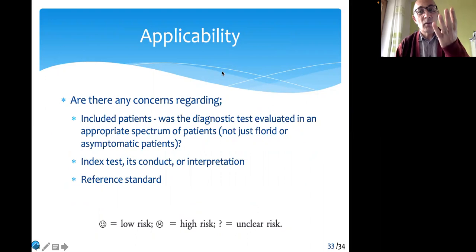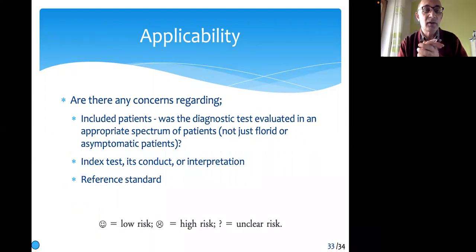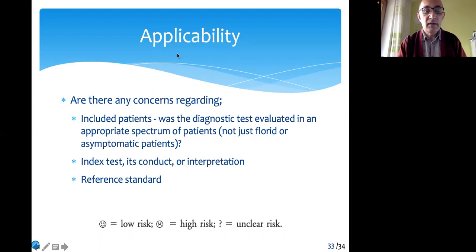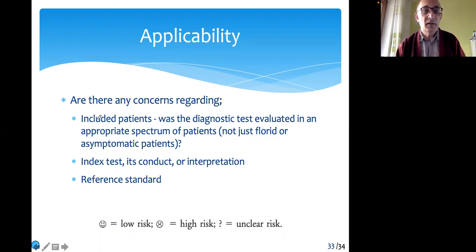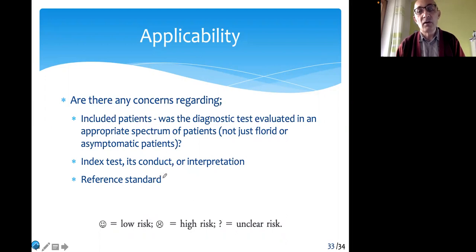Those are the four main domains of QUADAS-2. There is one additional domain — namely applicability. Applicability is not discussed under the risk of bias domain; it should be seen as a separate domain. Here we look at whether the patients or the test or the condition is applicable to our own practice. The questions include: were included patients evaluated in an appropriate spectrum? Was the diagnostic test evaluated in an appropriate spectrum of patients — not just mild or asymptomatic patients? And are the index test conduct or interpretation and the reference standard applicable to our general population?